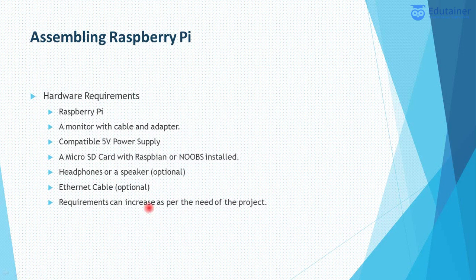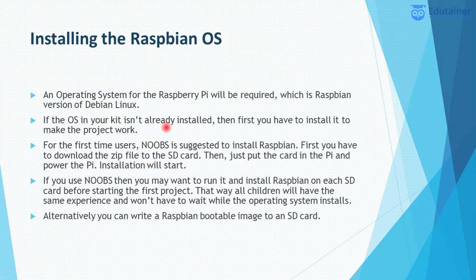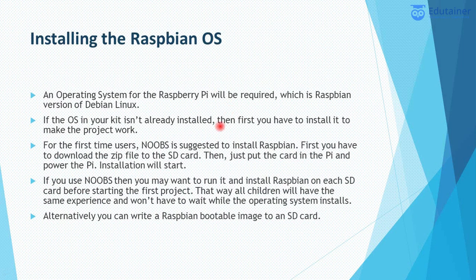Now let's talk about installing the Raspbian OS. OS stands for operating system, and Raspberry Pi works on an operating system of Debian Linux. If the OS is not installed in your kit, then you have to install it. You can either choose NOOBS or Raspbian. For details, you can read it in the presentation.